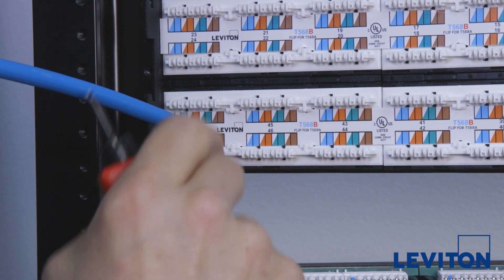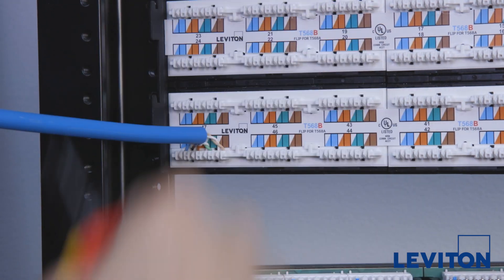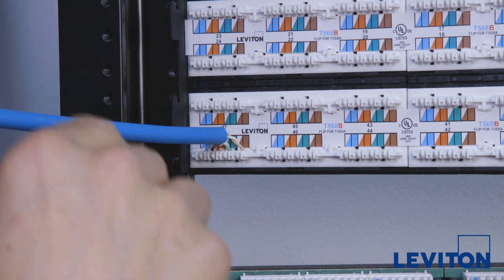With one wire terminated, notice how the pairs have their twists left in them, how the wires come from the middle of the module out toward the IDC, and how the wires were cut below the IDC.